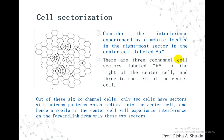The center cell labeled five has three co-channel cells to the right and three to the left. Out of these six co-channel cells, only two have sectors with antenna patterns that radiate into the center cell. Hence, a mobile in the center cell will experience interference on the forward link from only those two sectors. The resulting signal to interference ratio is calculated to be 24.2 decibels, which is a significant improvement over the omnidirectional case where the worst-case SIR is 17 decibels.